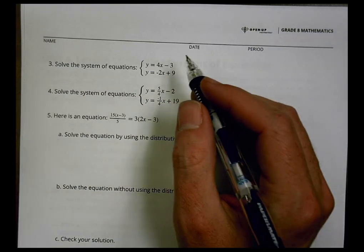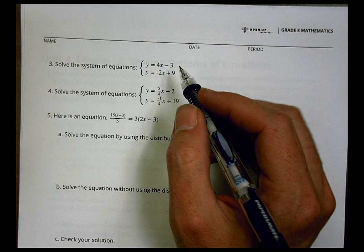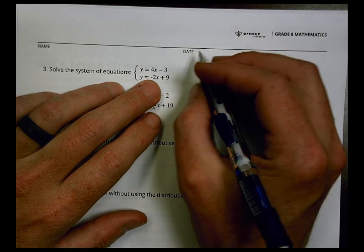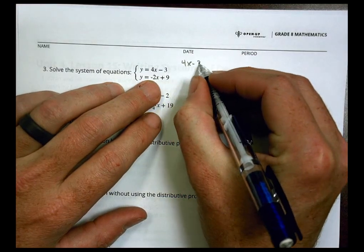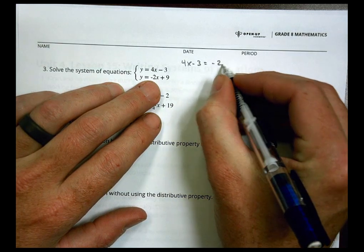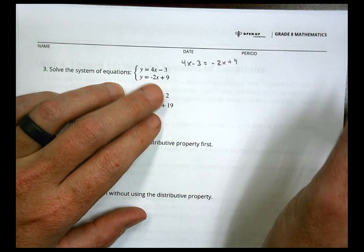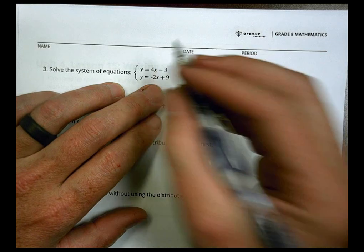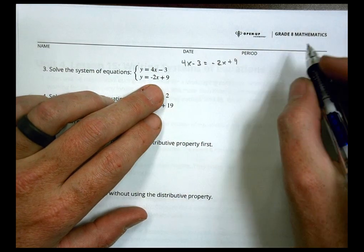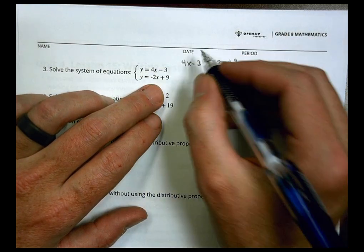Number 3 says solve the system of equations, and so we have two equations here. To solve them, what we want to do is set them equal to each other. So we'll do 4x minus 3 equals negative 2x plus 9, and we're going to solve for x.